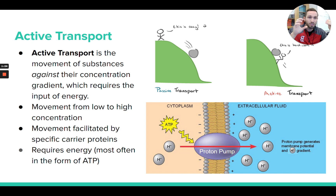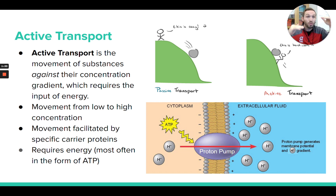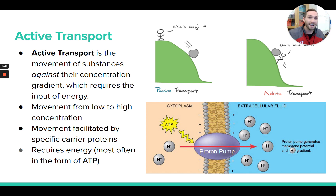Those solutes are moving to areas that already have a higher solute concentration, which actually gets things further away from equilibrium, not towards it. We're going to make the side that's already more concentrated even more concentrated. That is not something the universe wants — getting further away from equilibrium. So to do something the universe doesn't want to happen, you have to put in some energy. That's exactly what's going to happen in active transport.